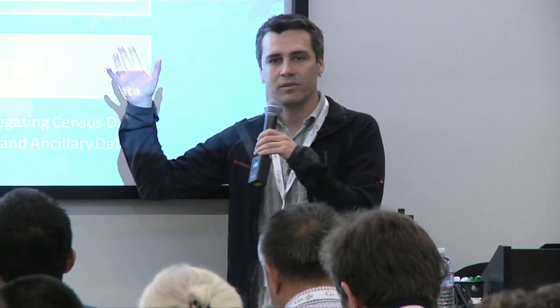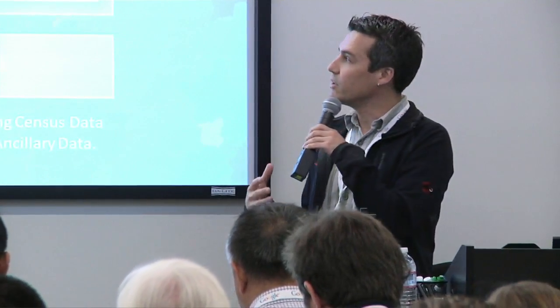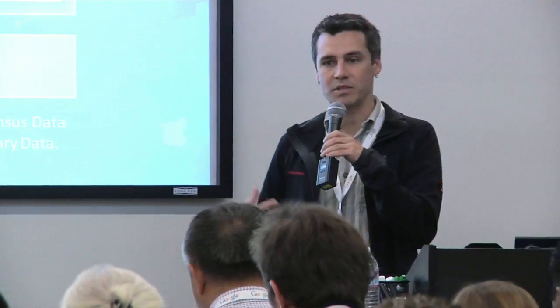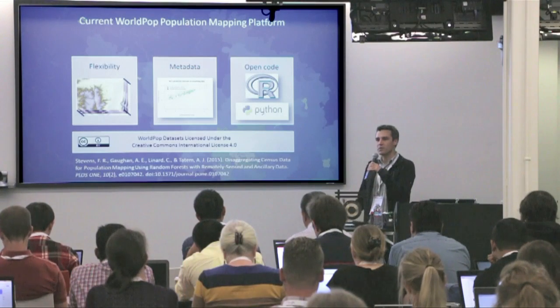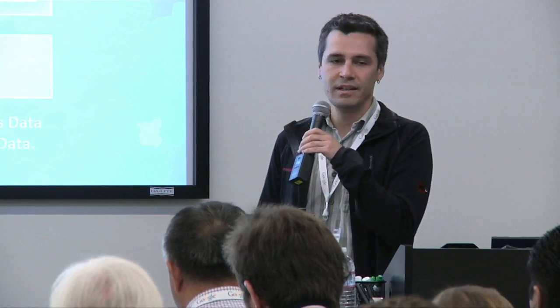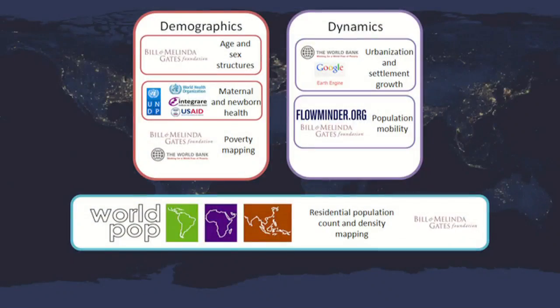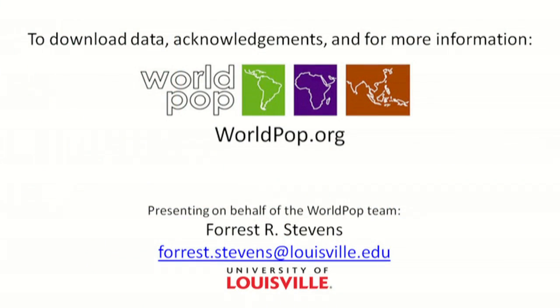All of this is based on open code, programmed mostly in R and Python. Up until recently, this was backed by a lot of ArcGIS-specific code, but with a Google Faculty Research Award we've transitioned all of this away from that proprietary environment to one that we can run on Compute Engine and Container Engine instances. We also use this in our own work for disaggregating to age and sex structures, looking at maternal and newborn health, poverty mapping, and more dynamic things. The big picture is that this is all going into Earth Engine — it's there now in a beta form, though it will be changing rapidly as we ingest the rest of the data.